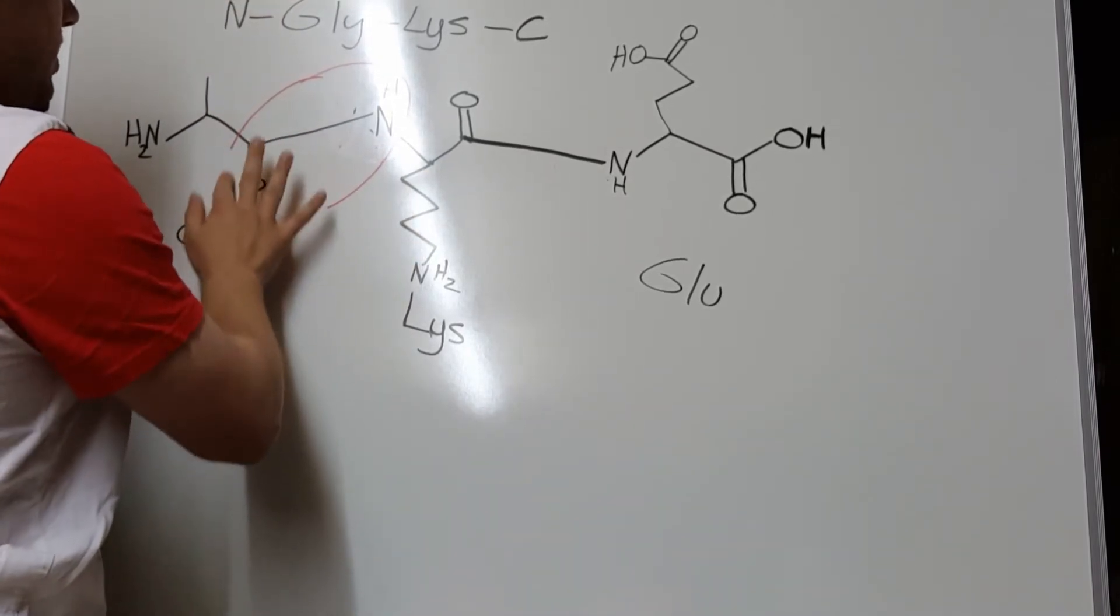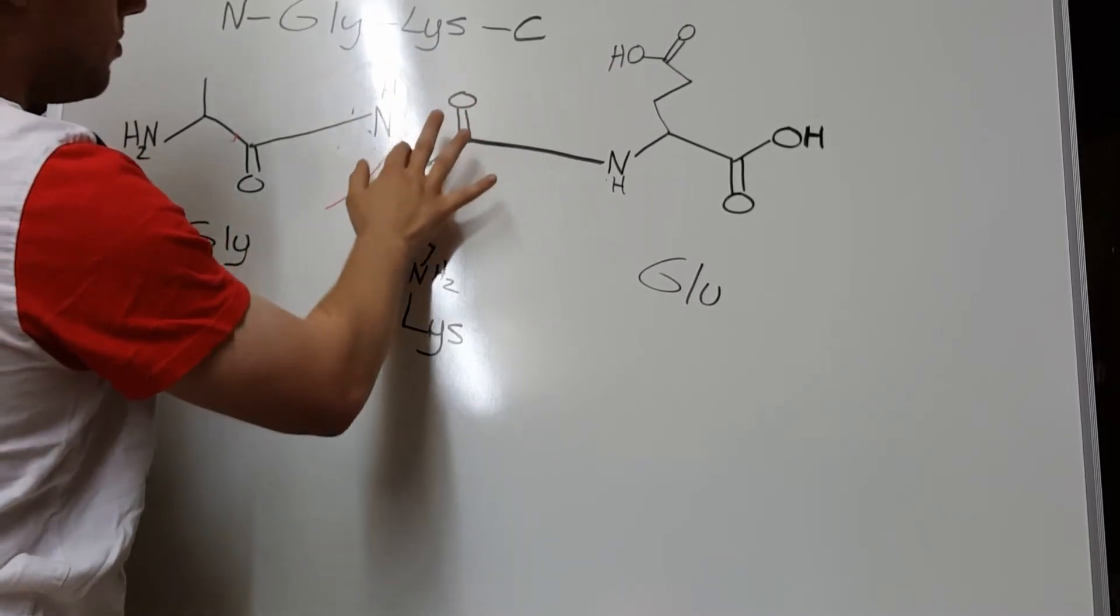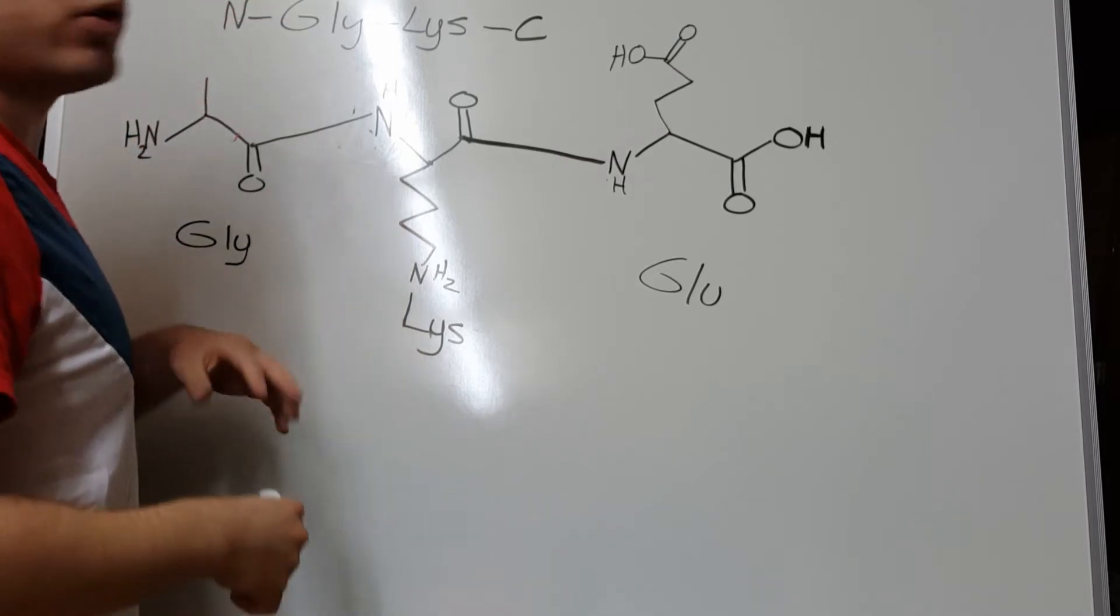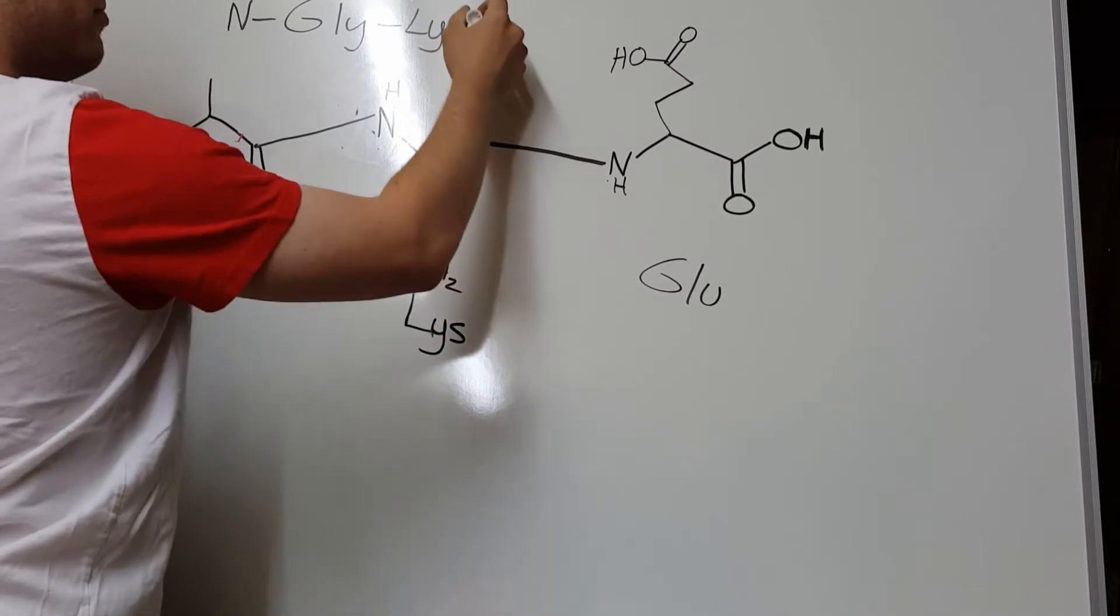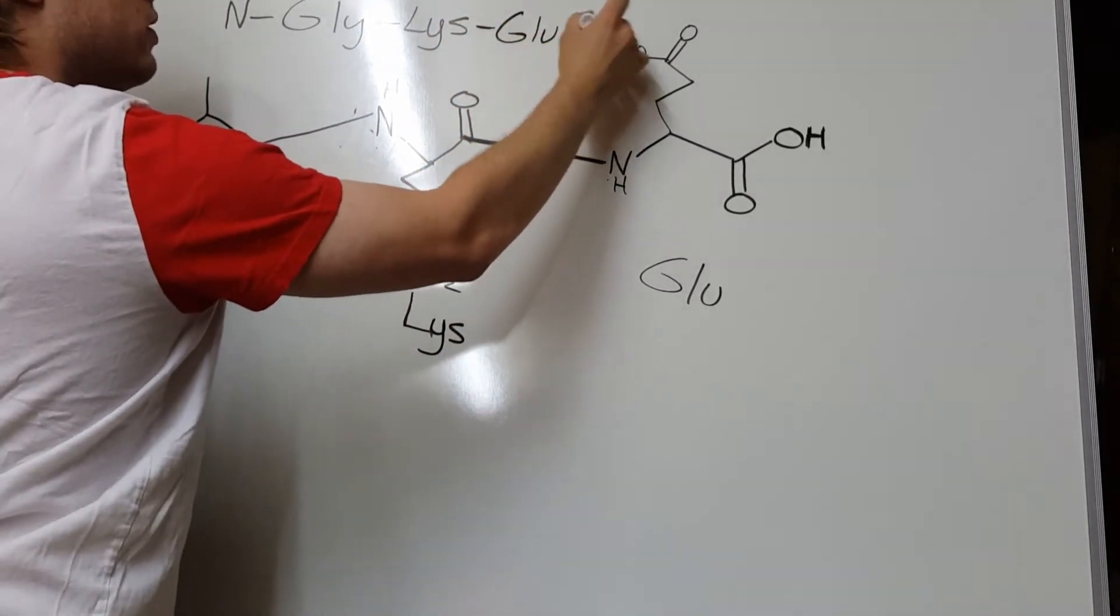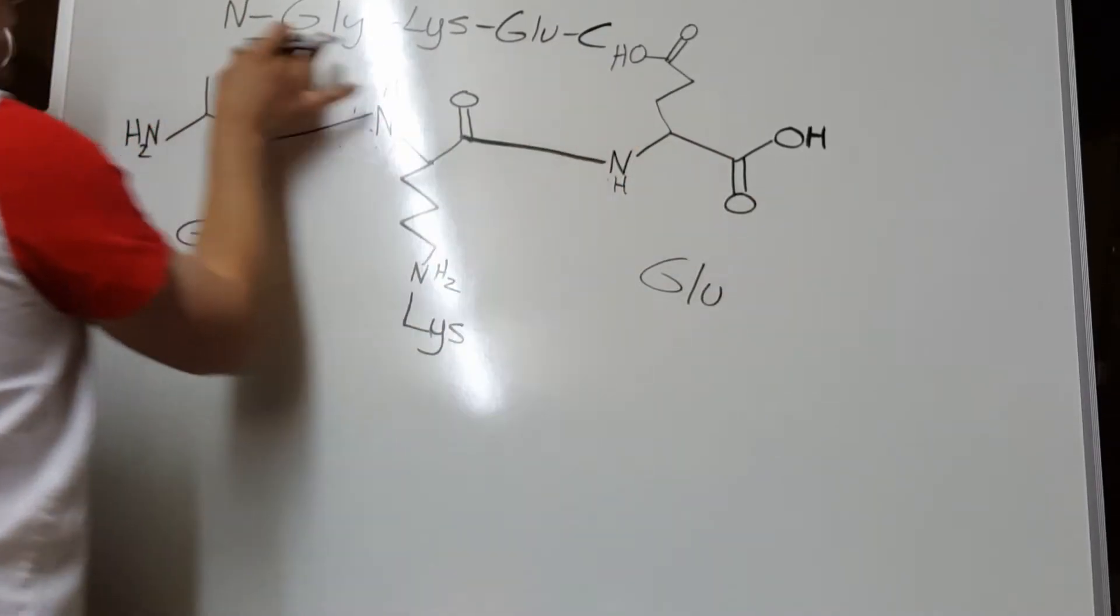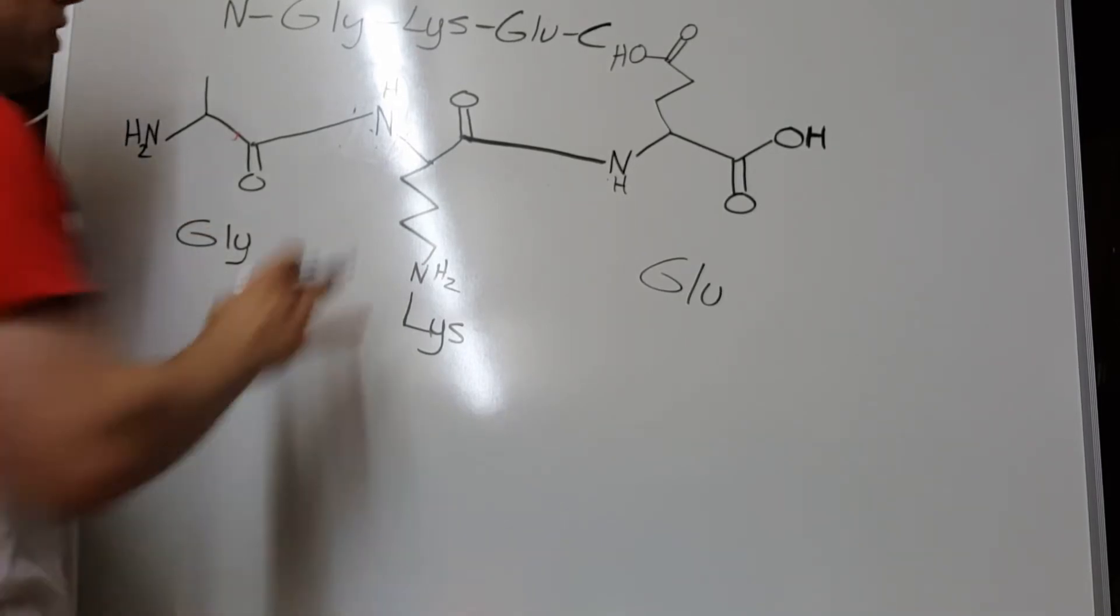Now, the next thing that they can ask you in regards to polypeptides is to treat them with a reaction called the Edman degradation. And the Edman degradation is really simple. You don't need to know any mechanisms for it. It's just a rule you have to know. So, right now, what polypeptide we have is glycine-lysine-glutamate, with the C-terminus being free on the glutamate, and the N-terminus being free on the glycine.